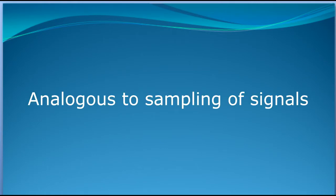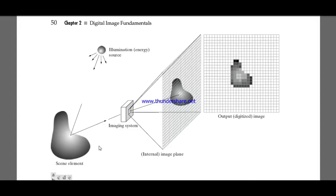The spatial resolution in image processing can be compared with the sampling of the signals in signal processing. So here you can see that this is a scene element — the photo that we want to click. This is the real life environment and I am clicking its photo. This is the imaging system, basically our camera. This is an illumination source.